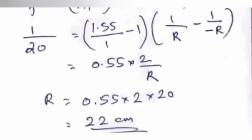1 by F is equal to (N2 by N1 minus 1) into (1 by R1 minus 1 by R2). 1 by 20 is equal to (1.55 minus 1) into (1 by R minus 1 by minus R), equals 0.55 times 2 by R. R is equal to 0.55 times 2 times 20 equals 22 cm.